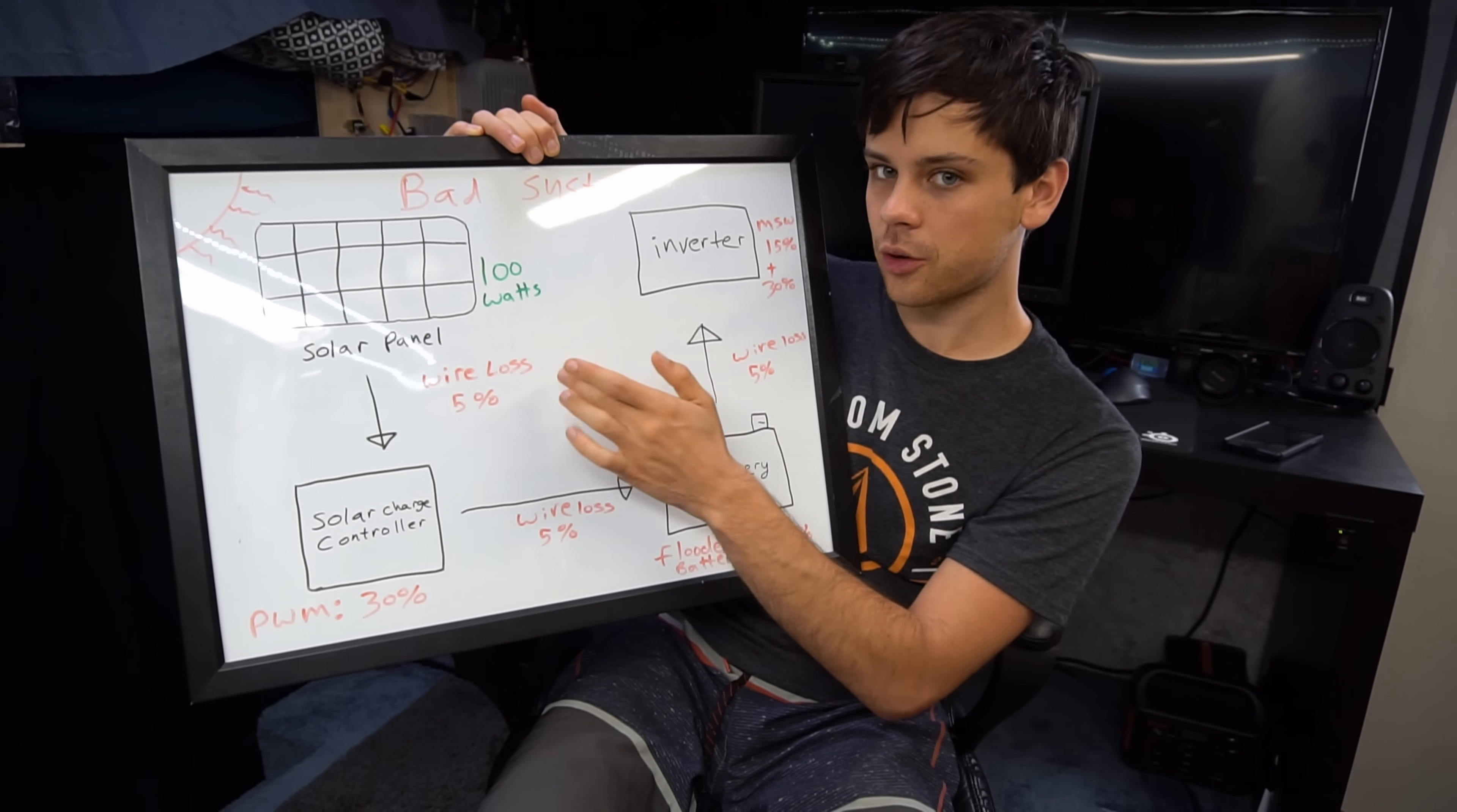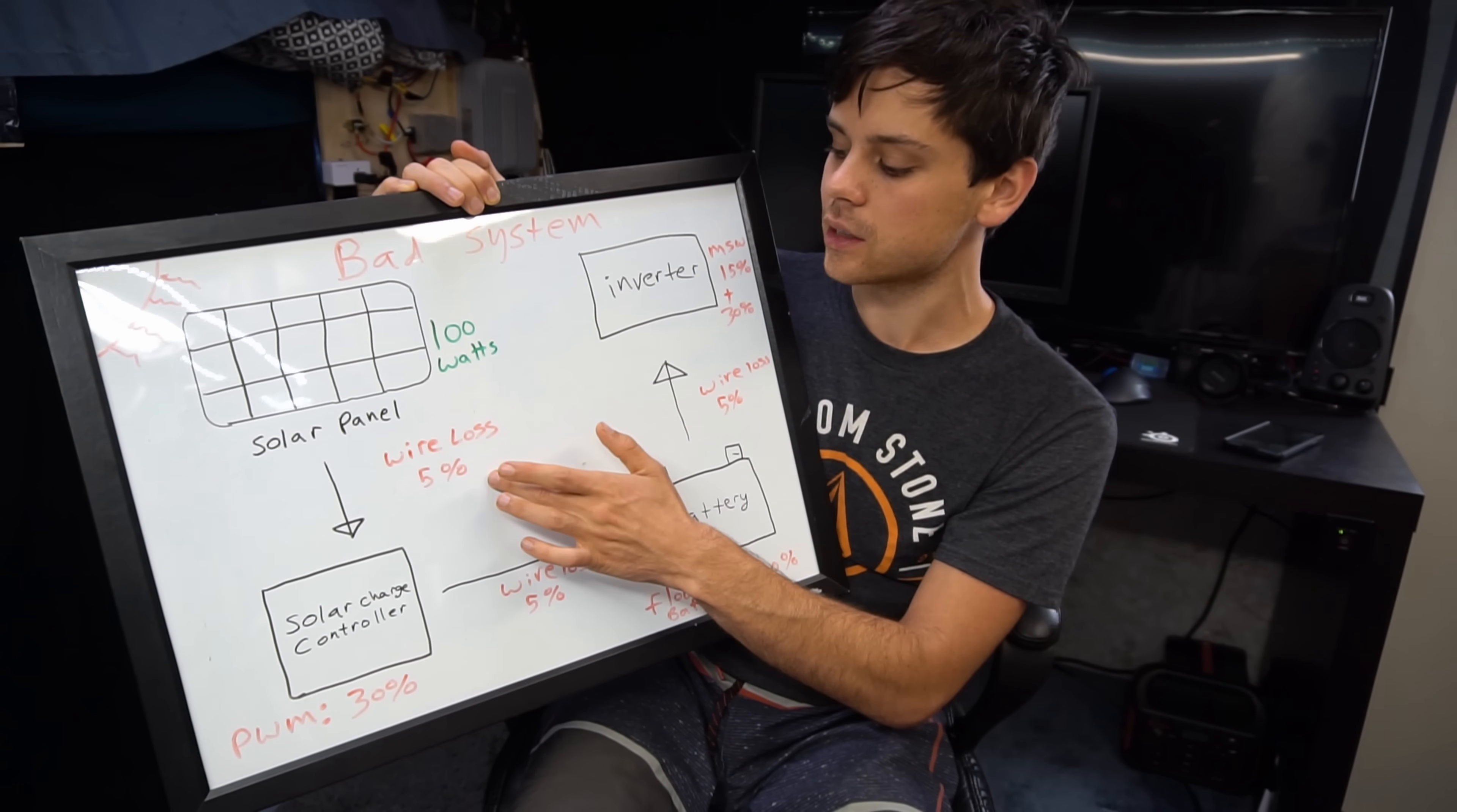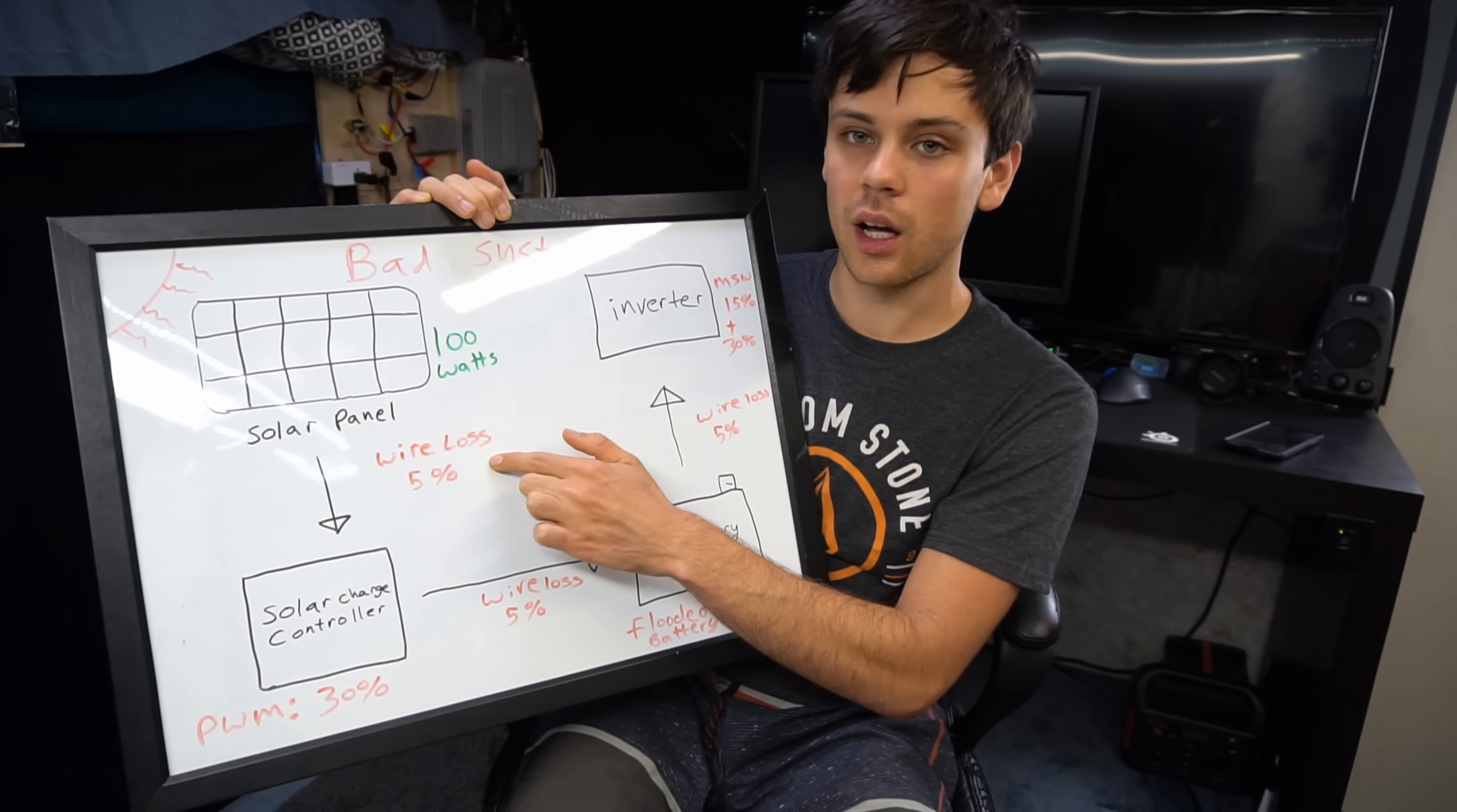Instead of a 1 to 3 percent loss which is what you should have in a good system, we're going to say that they have a 5 percent loss but this can go up astronomically depending on how badly designed the system is. But for most people they might be off by just a little bit so let's just say that's 5 percent if they don't know what they're doing. Going from the solar panel to the solar charge controller we're going to have a wire loss of 5 percent.